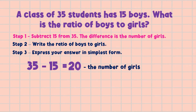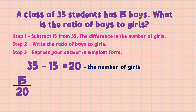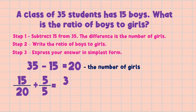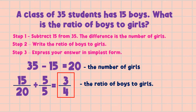For Step 2, we write the ratio of boys to girls. There are 15 boys and 20 girls. For Step 3, express the answer in simplest form. We find the GCF of 15 and 20, which is 5. We divide both numerator and denominator by 5: 15 divided by 5 equals 3, and 20 divided by 5 equals 4. Therefore, the ratio of boys to girls is 3 is to 4.